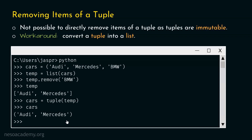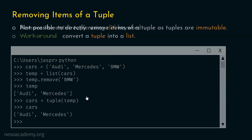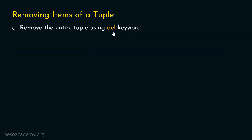What if we want to delete the entire tuple? In order to do this, we can use the famous del keyword. If we want to remove the entire tuple, we can use the del keyword directly on the tuple — we don't have to convert it into a list first. Just like with lists, we can use the del keyword for tuples also.